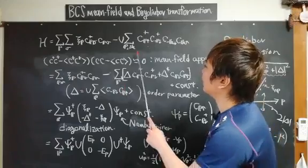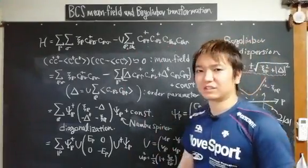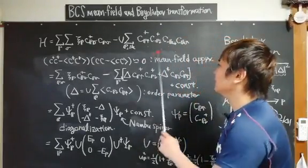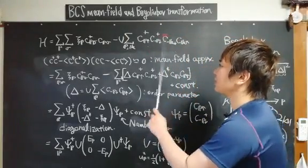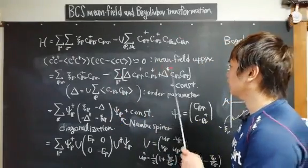Now you can find the second term involves four fermionic operators, so it is difficult to solve this problem. So then we use a so-called mean field approximation.